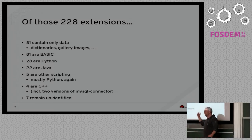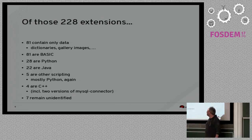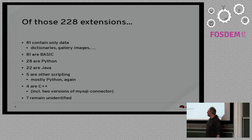28 were Python — some kind of ladder up in the complexity of these languages probably. 22 were Java. There were five that used scripting in some way, mostly Python again. And just four of them — just four — were C++, where we have the most fears of breaking anything. And that included even two different versions of the same extension that we even build bundled with LibreOffice itself, so that's an easy one to keep track of.